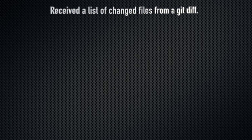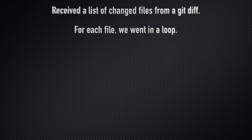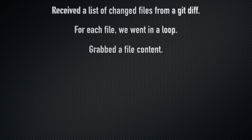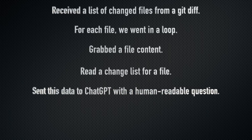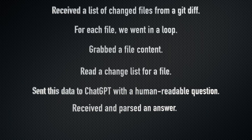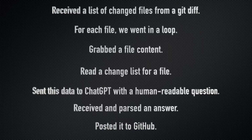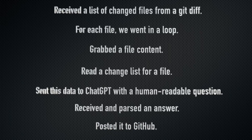In a nutshell, here's what we've done: we received a list of changed files from git diff, then for each file in a loop we grabbed the file content, read the changelist, sent this data to ChatGPT with a human-readable question, received and parsed the answer, and posted it to GitHub. It's a pretty straightforward script.